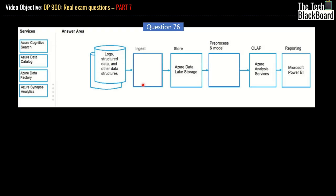Let's jump to question number 76. In this question, you are given some services on the left-hand side like Cognitive, Data Catalog, Data Factory, or Azure Synapse. You are given a flow. The flow starts with logs, structures, data and other data structures — this is your data source. You have different types of data and you want to process it. The first step is ingesting the data, and you have to identify which service should serve as ingestion.